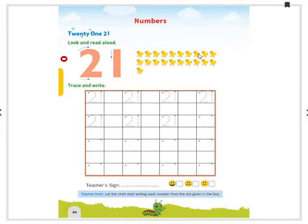7, 8, 9, 10, 11, 12, 13, 14, 15, 16, 17, 18, 19, 20, and 21. Yes, here there are 21 small chicks just like you. 21, 21, 21.